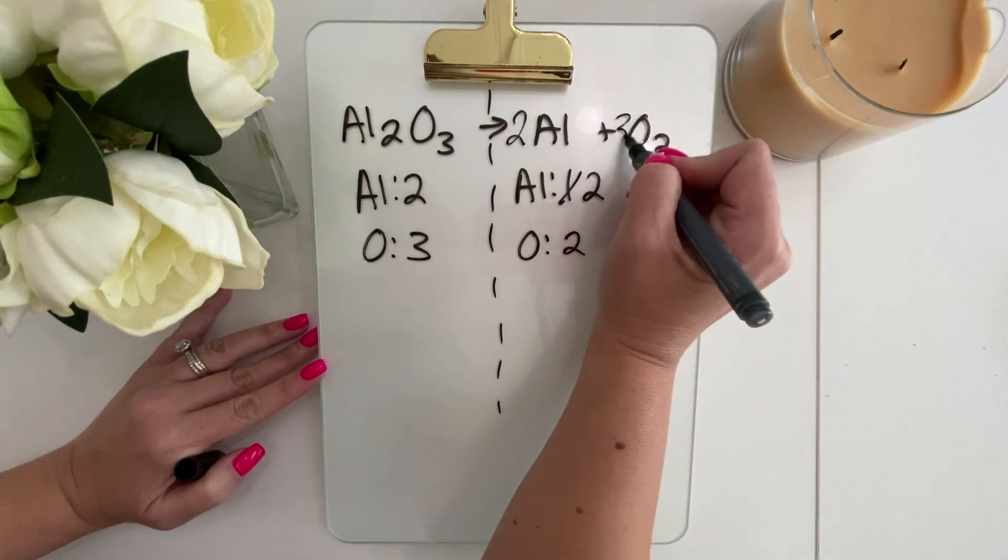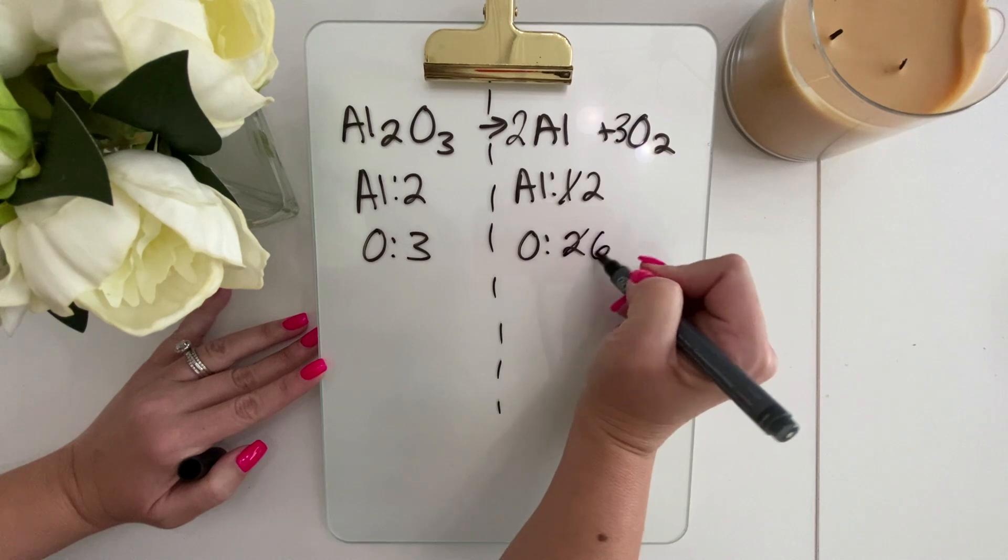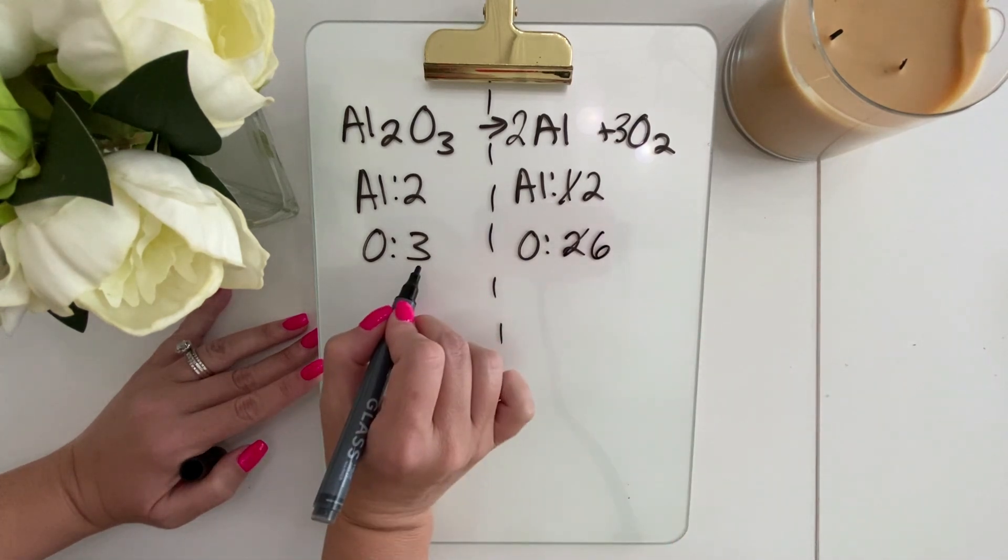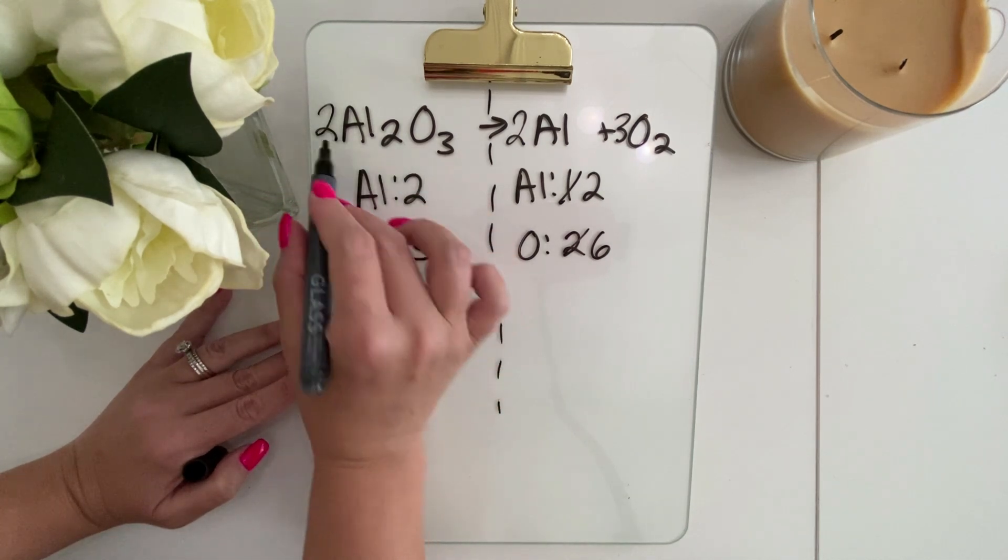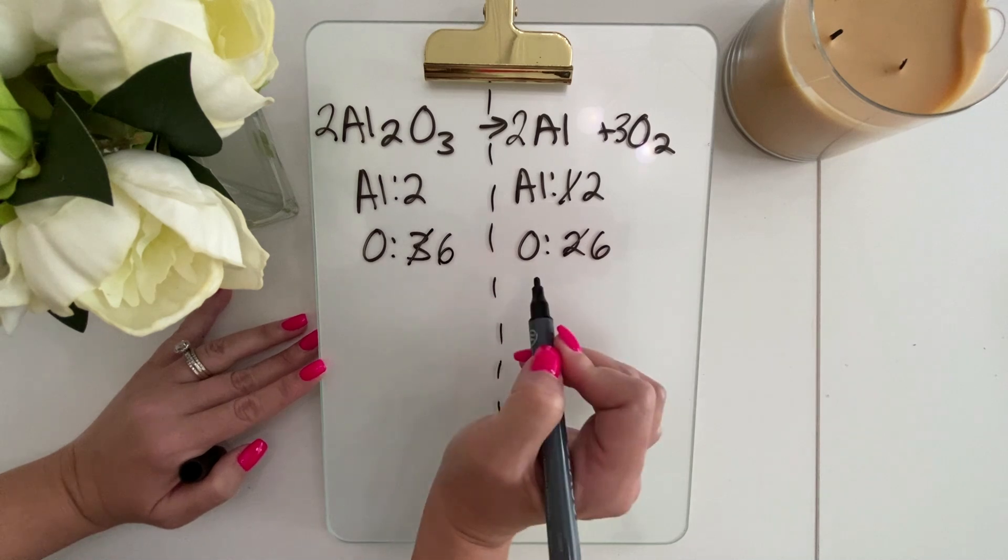So over here, if we put a coefficient of a 3, that will give us 6 oxygen. So now our goal is to get 6 oxygen over here. So the lowest number coefficient we can put in front would be a 2. 2 times 3 would give us 6.